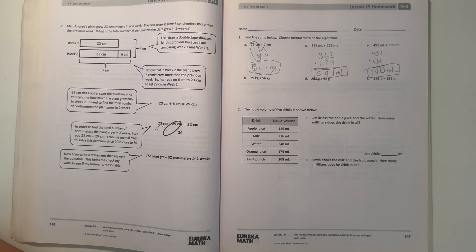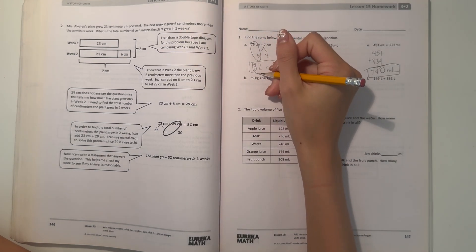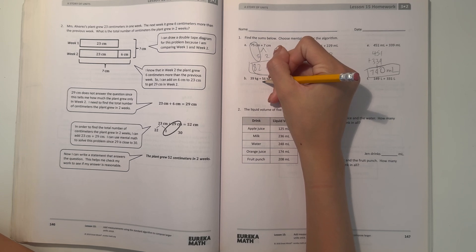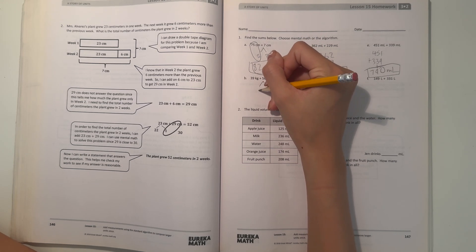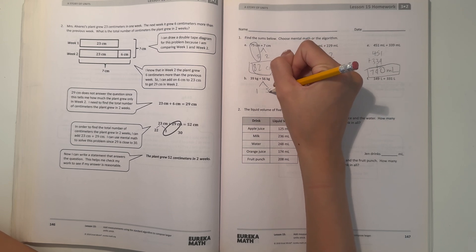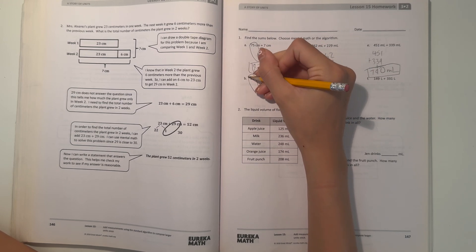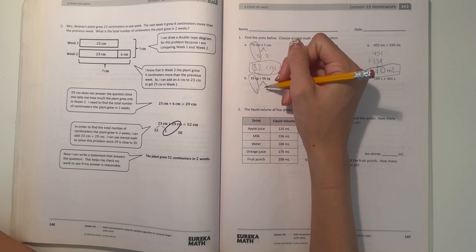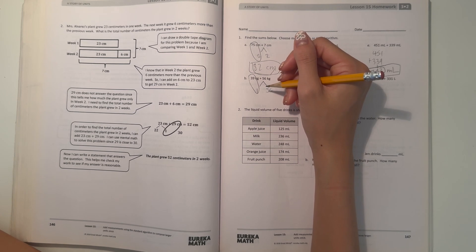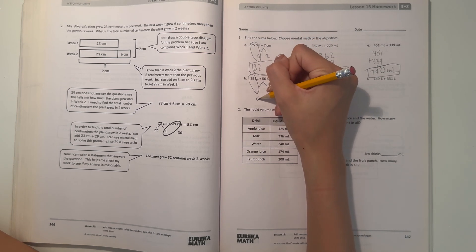Part B, we have 39 plus 56. Let's do mental math again. 39 needs one more to make 40, so let's take one from here and that gives us 55. 39 plus 1 is 40, plus 55 is 95, which means 39 plus 56 equals 95.